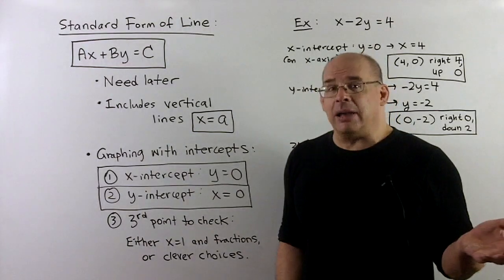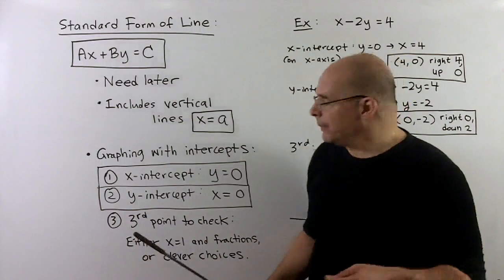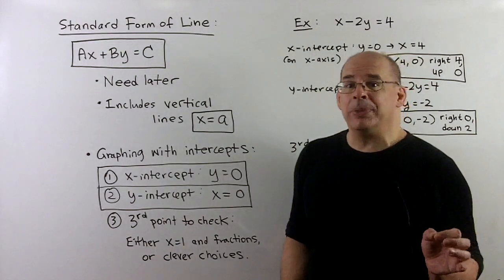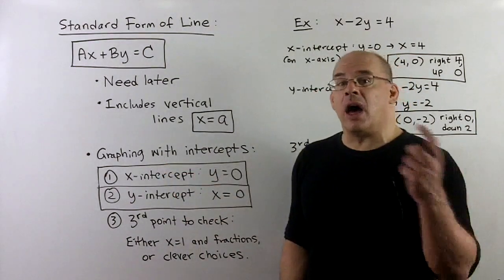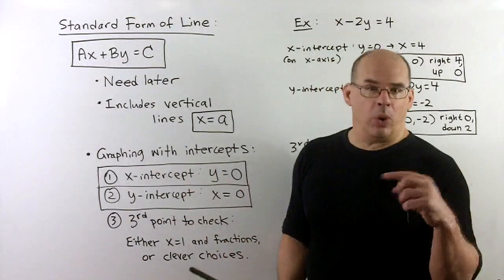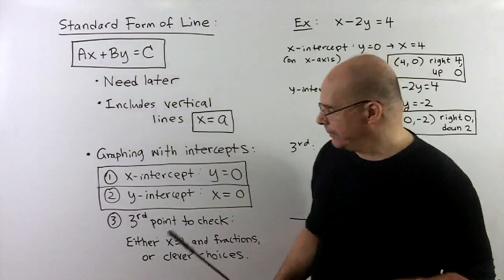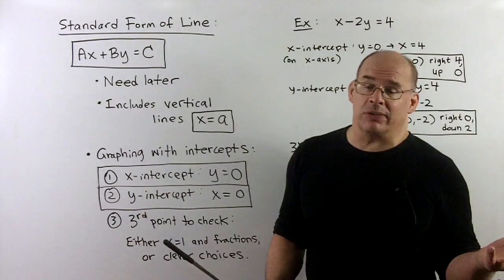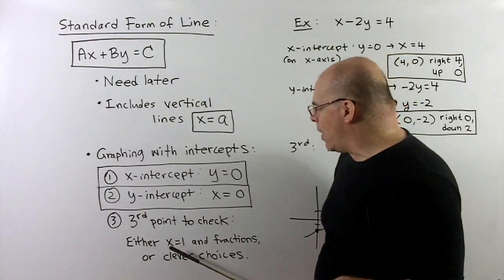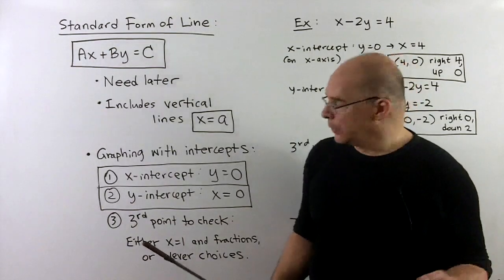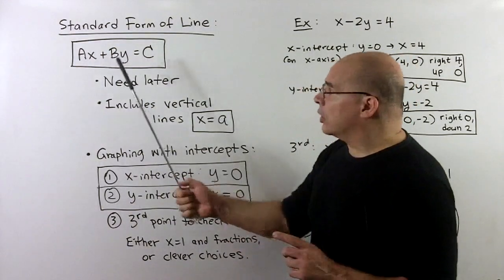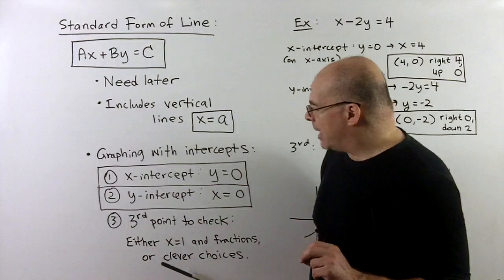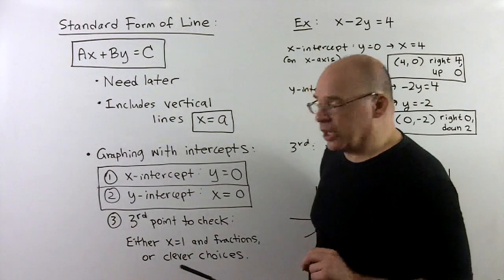That's enough to get a line, but if you want to be sure, plot a third point. Pick your favorite x or y, substitute it into the equation, and figure out the other coordinate to get a point to check. You could always let x equal one, though you may need to deal with fractions. Or stare at the equation to find inputs that produce integers — that takes a little intuition.